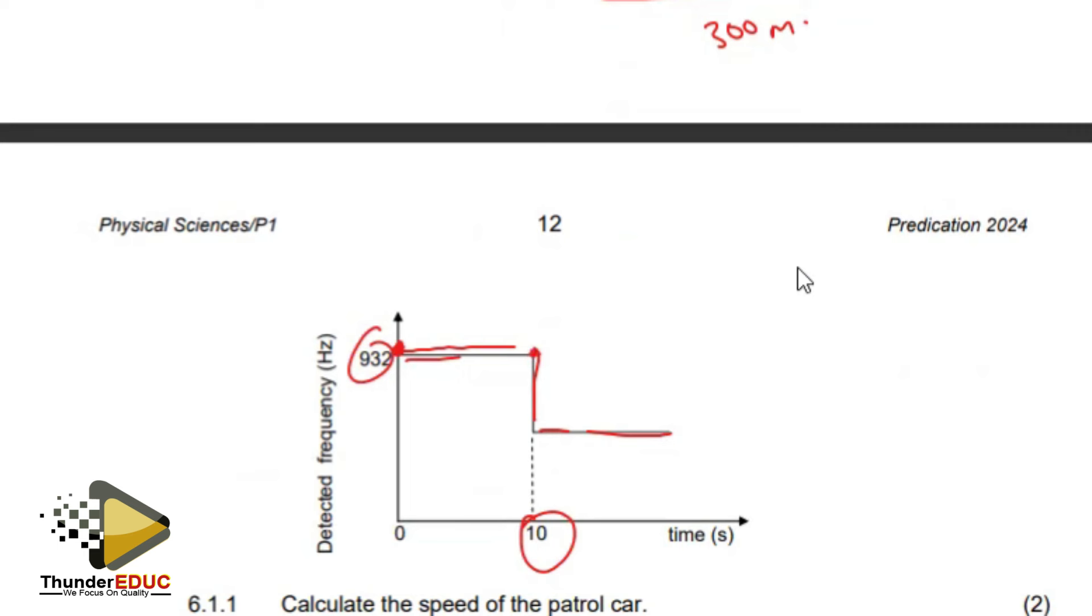Which means that this car, the vehicle, is going to move for 10 seconds before it gets to the observer. So if I use speed equals distance over time, which is 300 over 10, which is 30 meters per second.